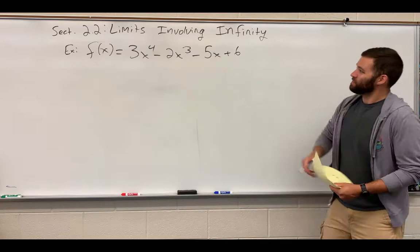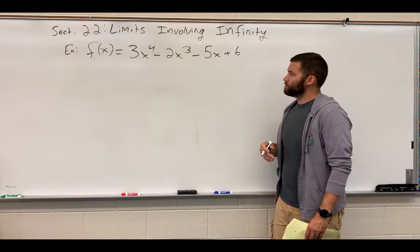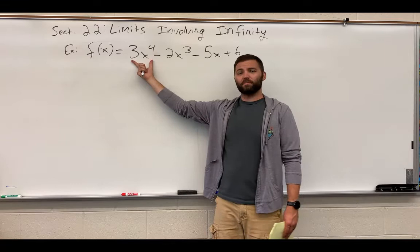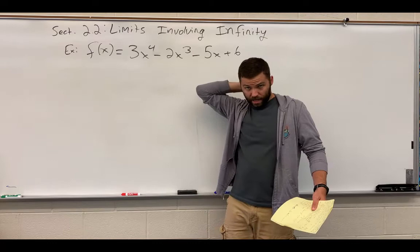So, let's start with the function f of x is equal to 3x to the fourth minus 2x cubed minus 5x plus 6. All right, this is a polynomial function. And what you might remember from pre-calc and function analysis is that this polynomial function, as x gets large in the negative or the positive direction, is going to be basically 3x to the fourth. It's going to be basically the highest power of x with the same leading coefficient.